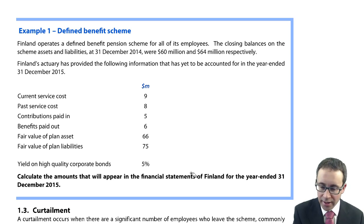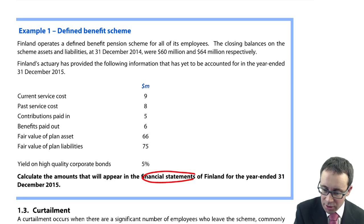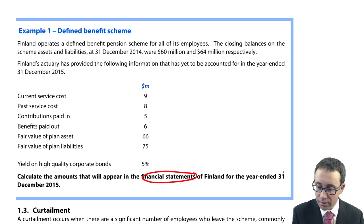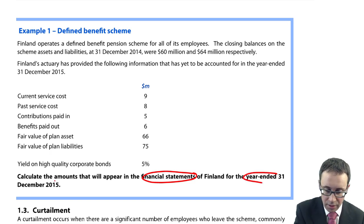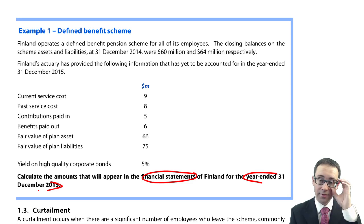So it says the amounts to appear in the financial statements — the statement of financial position and the statement of profit or loss. Finland could be the parent in question number one, with a year end of December 2015 as the closing year.